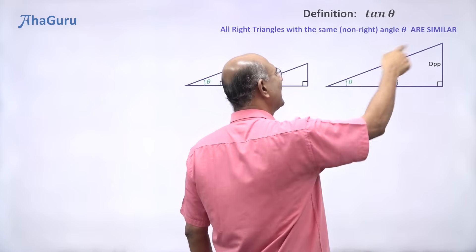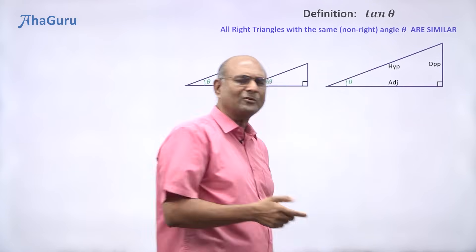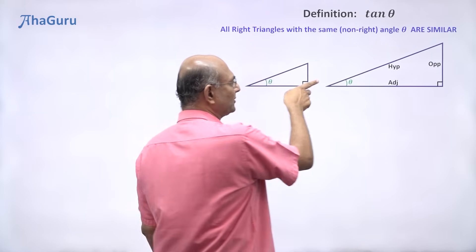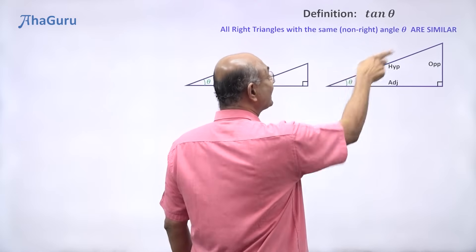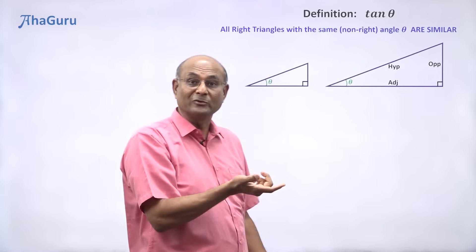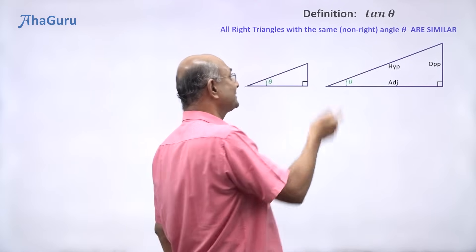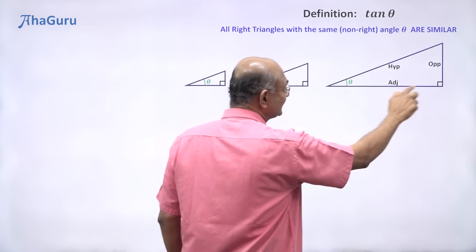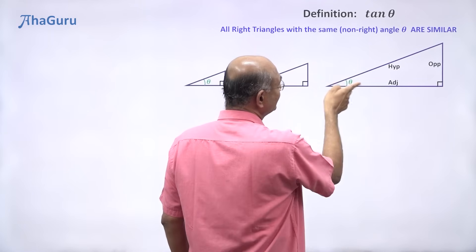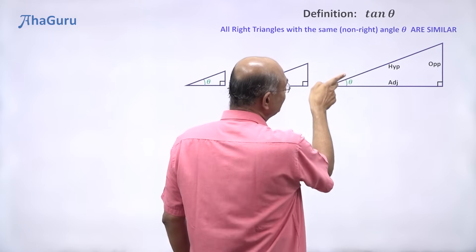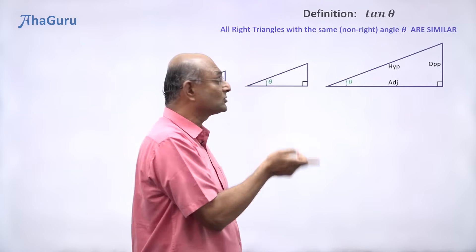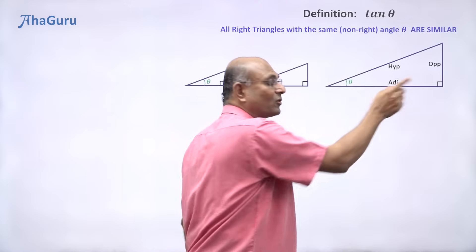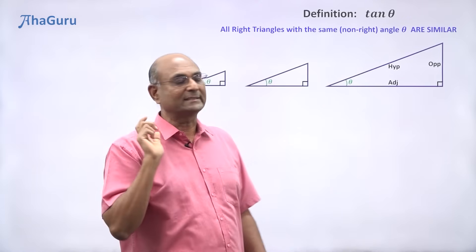Now you might argue that the hypotenuse is also adjacent. Yes, you are right — the hypotenuse is also adjacent. But it already has a name, hypotenuse, so why waste one more name on it? So we say the adjacent side is the one adjoining angle theta but it is not the hypotenuse. So this is called the adjacent side.